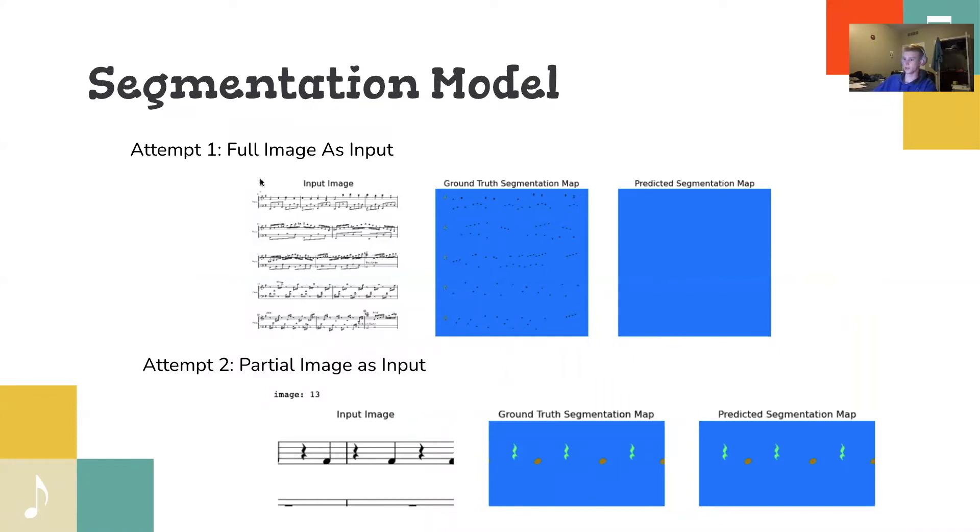So for our first attempt, what we actually did was we tried to pass in the entire sheet music into the UNET. And we found that because the things that we're identifying were such small little parts of the image, the UNET basically all the time just predicted the background, no matter the amount of epochs that we chose. So our second attempt was to instead take small little windows of this image and train our network on that. And we found that not only was the training time drastically reduced, but we also increased the accuracy by quite a lot.